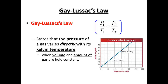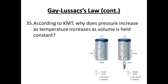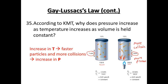Our last law is Gay-Lussac's Principle. Gay-Lussac's Principle states that pressure and temperature are directly related. The equation is set up so that if pressure goes up, temperature must go up to keep everything equal. According to KMT, why does pressure increase as temperature increases when volume is constant? If we increase temperature, particles move faster, causing more collisions, which means more pressure — because pressure is the amount of collisions. Temperature increases, so does pressure: increase in temperature → faster particles → more collisions → more pressure.